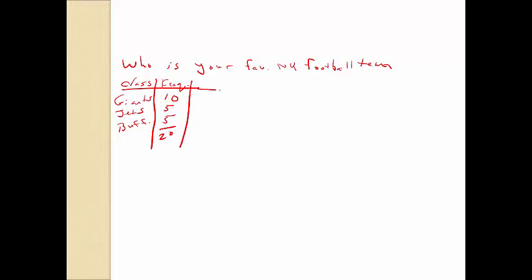Next I want to figure out the relative frequency. This is just 10 divided by 20 — 50%, or a proportion of 0.5 — were Giants fans. Five divided by 20 is 0.25 for Jets fans, and another five divided by 20 is 0.25 for Buffalo fans. These sum to one, remember.